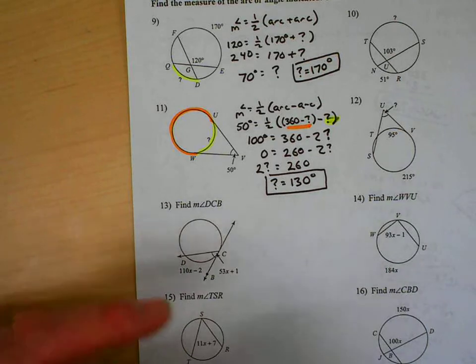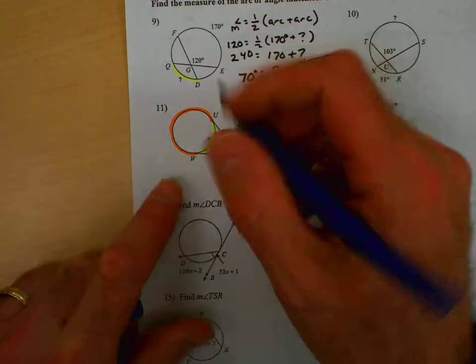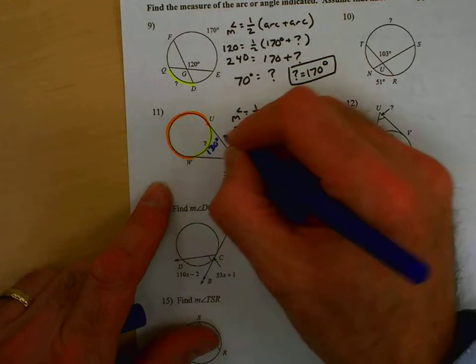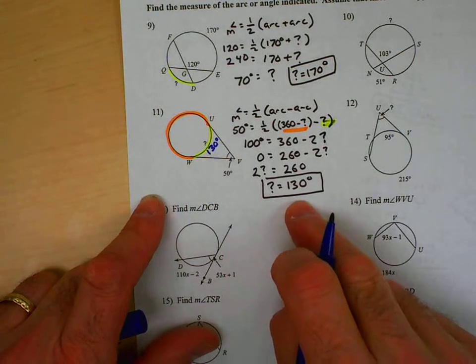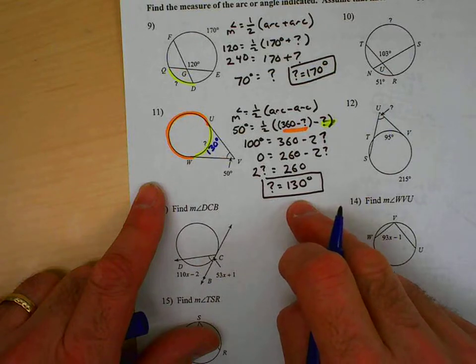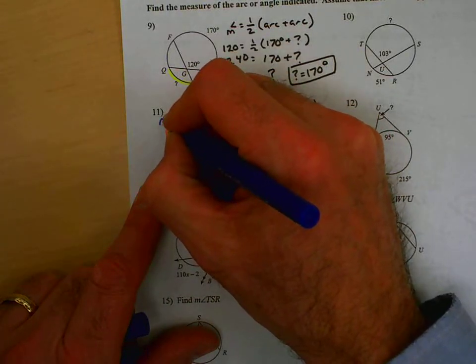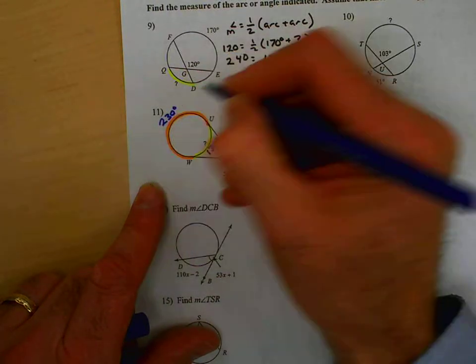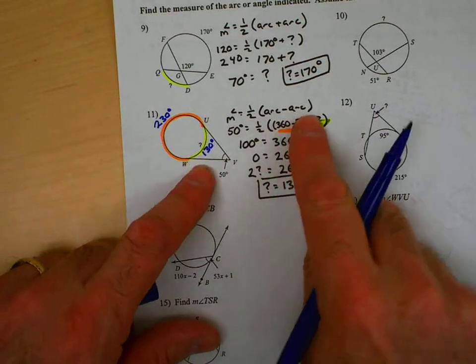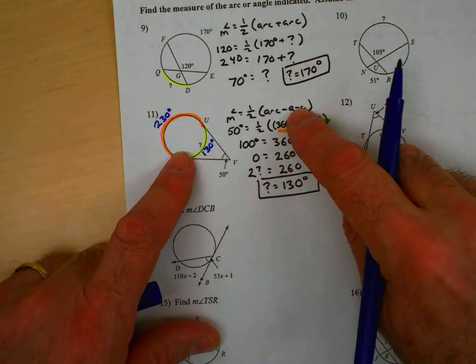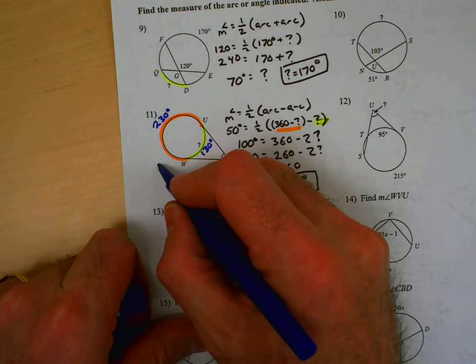And very quickly, let's go ahead and throw that in there. If this was 130, 360 minus 130 is 230. Now, if I take 230 minus 130, that's 100. Half of 100 is 50. It works. So, I check.